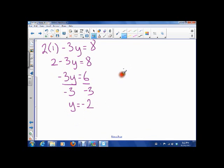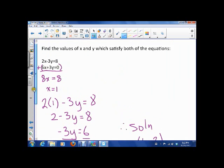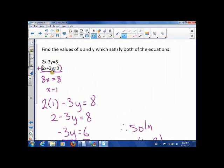So I get y is negative 2. So therefore, my answer, right, remember x was 1 and y is negative 2. So that's another way to figure out the xy coordinates that work for both of these equations. So let's try one more.